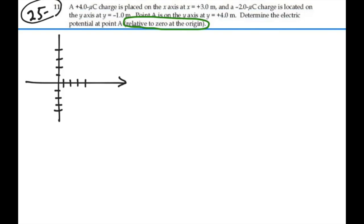So we have a charge — four micro coulombs at x equal plus 3, right here — a positive charge. Let's call that Q1, four micro coulombs. And then we have a negative charge at y equal minus 1. That charge, call it Q2, is negative 2 micro coulombs. And we want to find the potential at y equal 4 on the y axis. Let's call that point A. Let's call the origin point B.